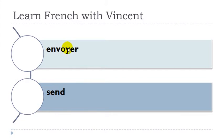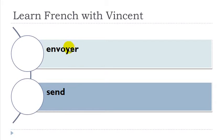Envoyer. It's quite interesting because you've got this 'y' here, but if you've got one vowel before and one vowel after, it changes — as if it would be 'i' twice. You get the sound 'oi', and then 'er' gives 'oi'. Envoyer. Envoyer.